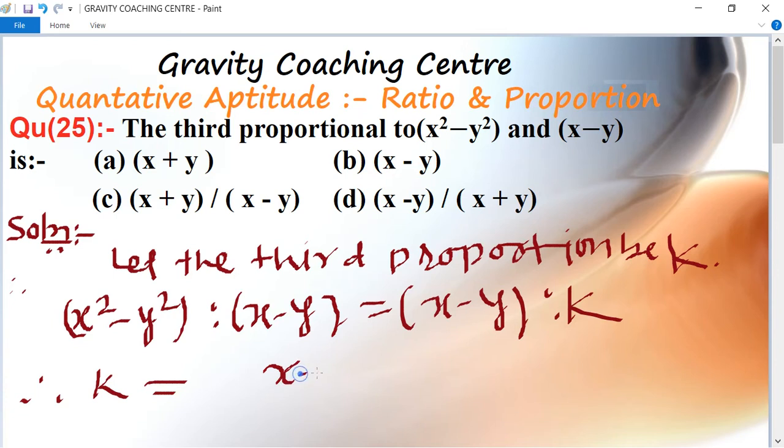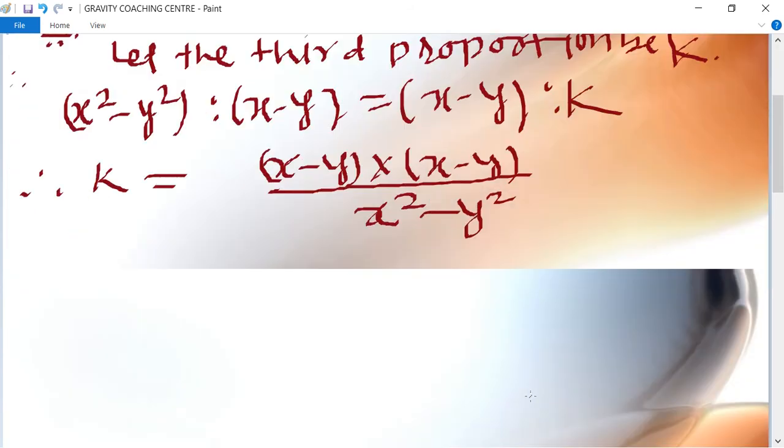This simplifies to (x - y)(x - y) / (x² - y²). Now we use the formula for x² - y², which is the product of (x + y) and (x - y).